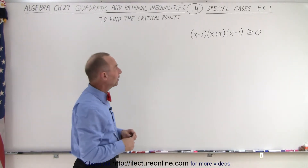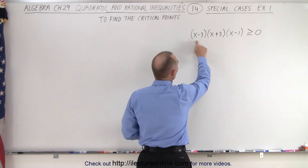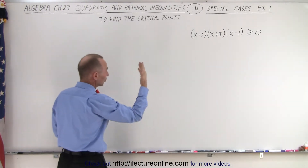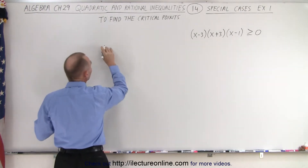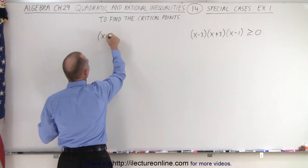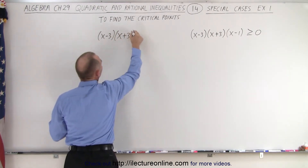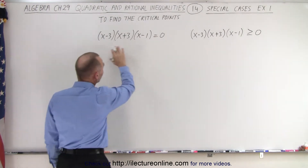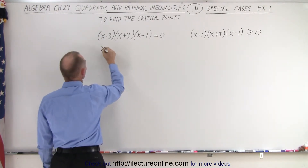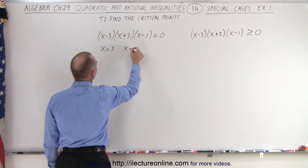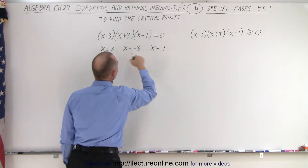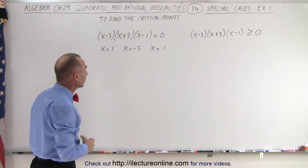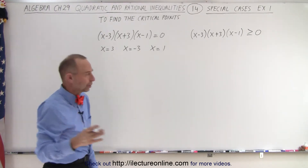We only need to worry about the numerator. We can find the critical points by determining which value for x will make each one of these binomials equal to zero. So we take the inequality and turn it into an equation: (x-3)(x+3)(x-1) = 0. We're looking for all values that make this true — x equals 3, x equals negative 3, or x equals 1. Those become our critical points.